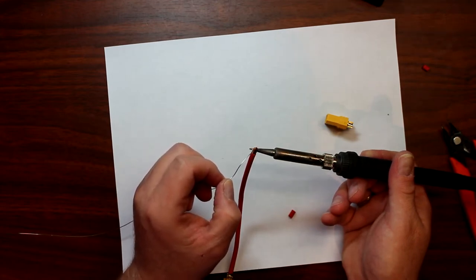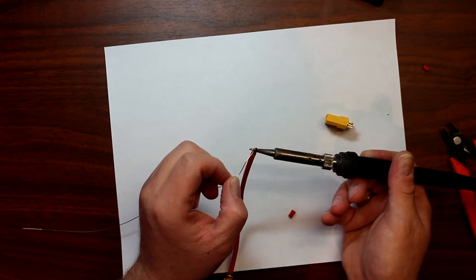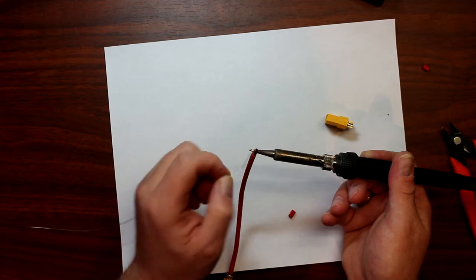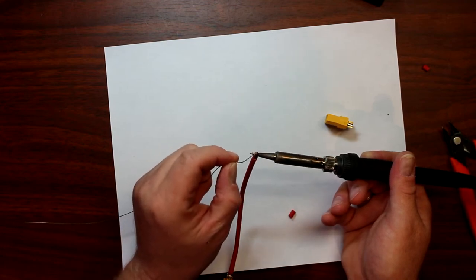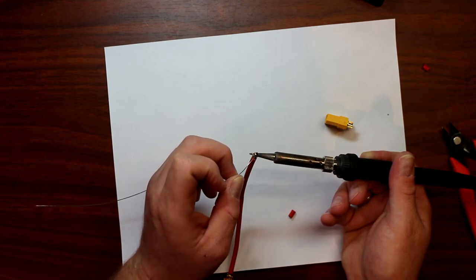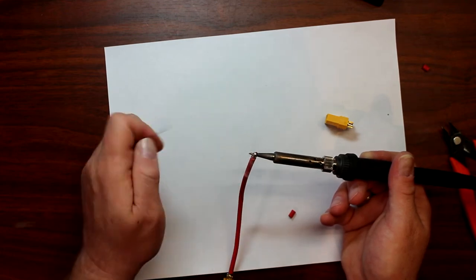Once the wire starts taking the solder, I go directly to the wire now and it's slowly going there. Now you don't want to put too much and you don't want to put not enough. You want the perfect amount.